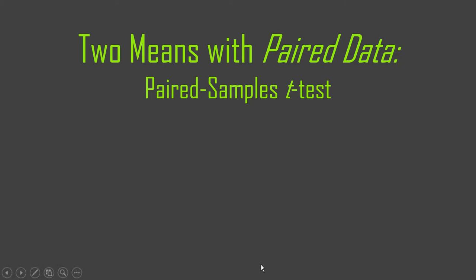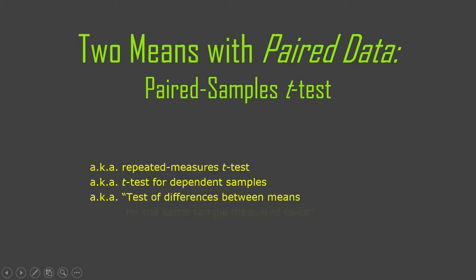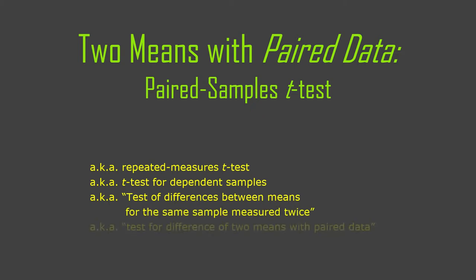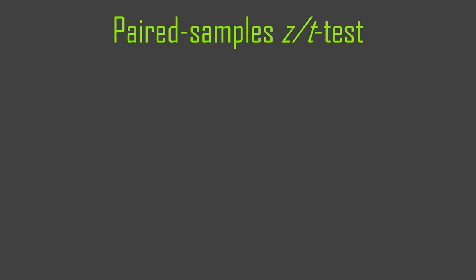This test, unfortunately, has many, many names. It's called the repeated measures t-test, t-test for dependent samples, or 'test of differences between means from the same sample measured twice' — that's a ridiculously long one from one textbook. Also, 'tests for the difference of two means with paired data.' They all make sense; we just can't decide on terminology.